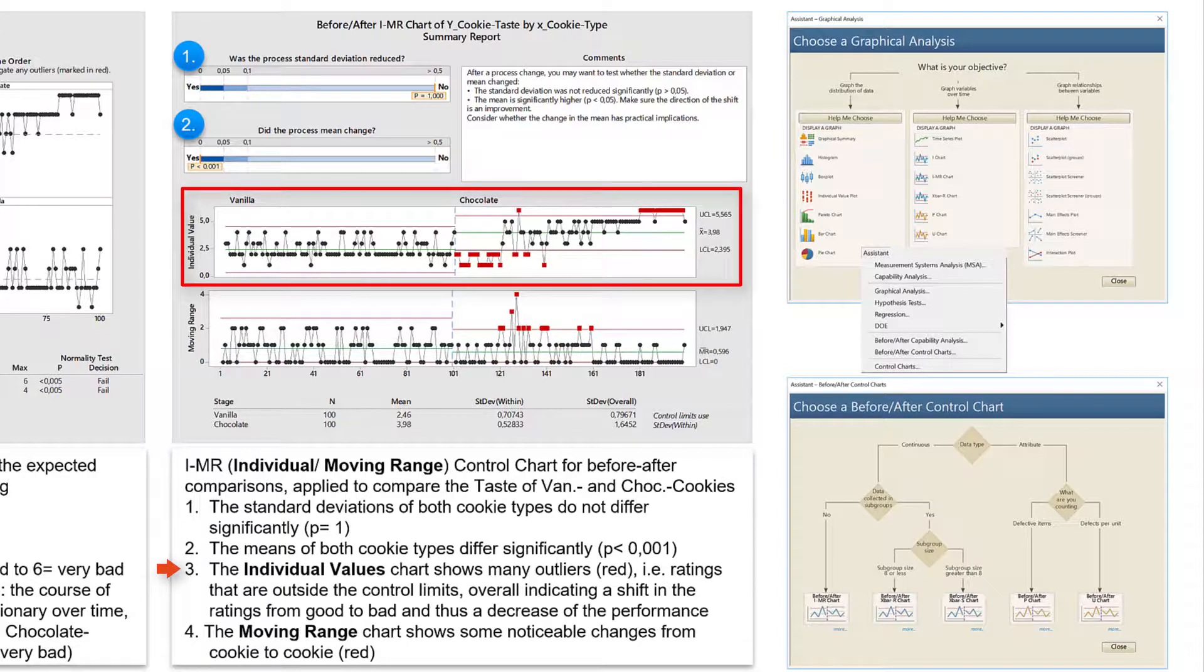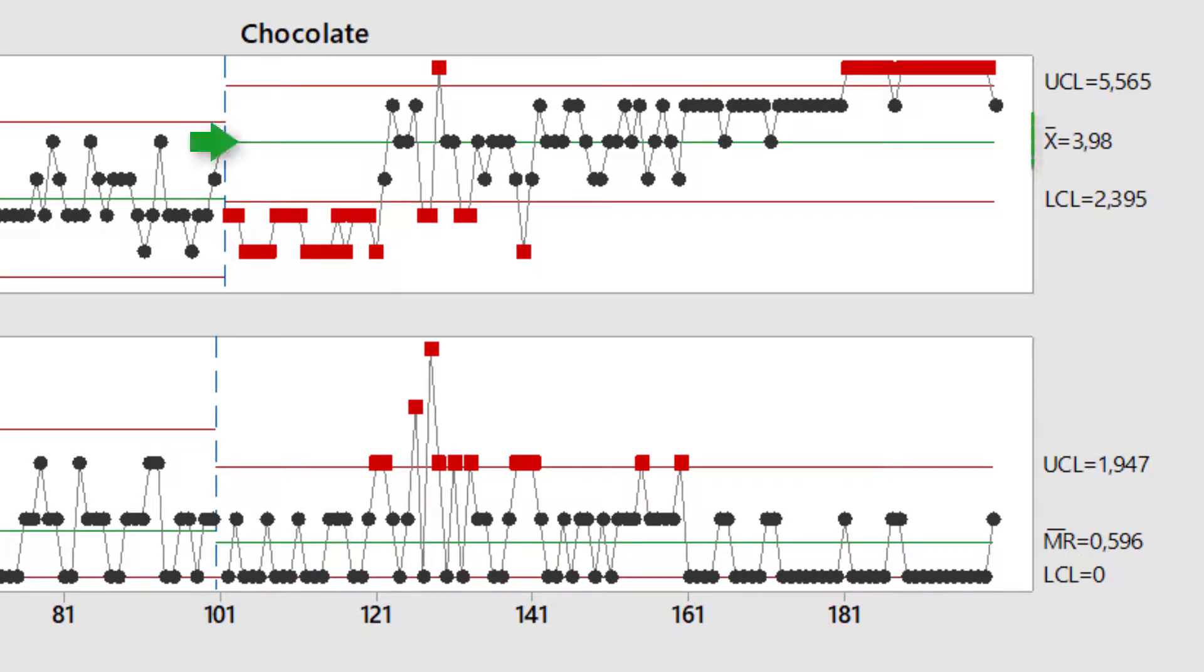The individual values chart shows the time course as in the time series plot, plus horizontal lines for the mean and the calculated upper and lower control limits. And it shows many outliers in red, i.e. ratings that are outside the control limits and indicate an overall shift in the ratings from good to bad and thus a decrease of the performance.